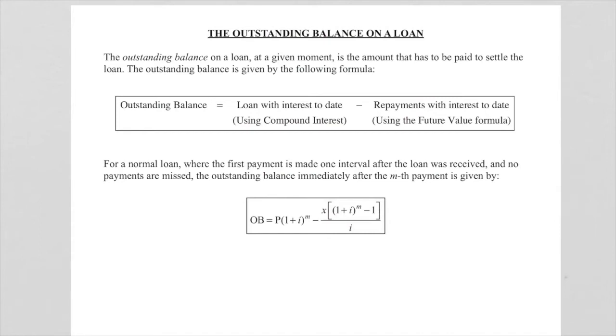The outstanding balance on a loan at any given point is the amount that has to be paid to settle the loan. The outstanding balance is given by the following formula. Please you don't need to memorize the formula, just remember how we're going to find it.